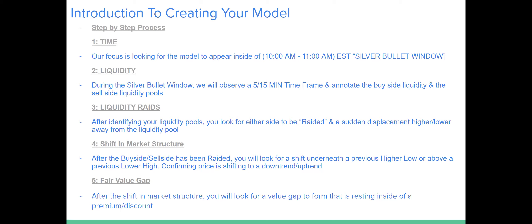Throughout the course we've talked about time, liquidity, and liquidity raids. Number four: a shift in market structure. After the buy-side or sell-side has been raided, you will look for a shift underneath a previous high or low, or above a previous low or high, confirming price is shifting to a downtrend or an uptrend. We've talked about market structure and how price can change from a bullish uptrend to a bearish downtrend and vice versa — you're going to look for that after a liquidity raid.